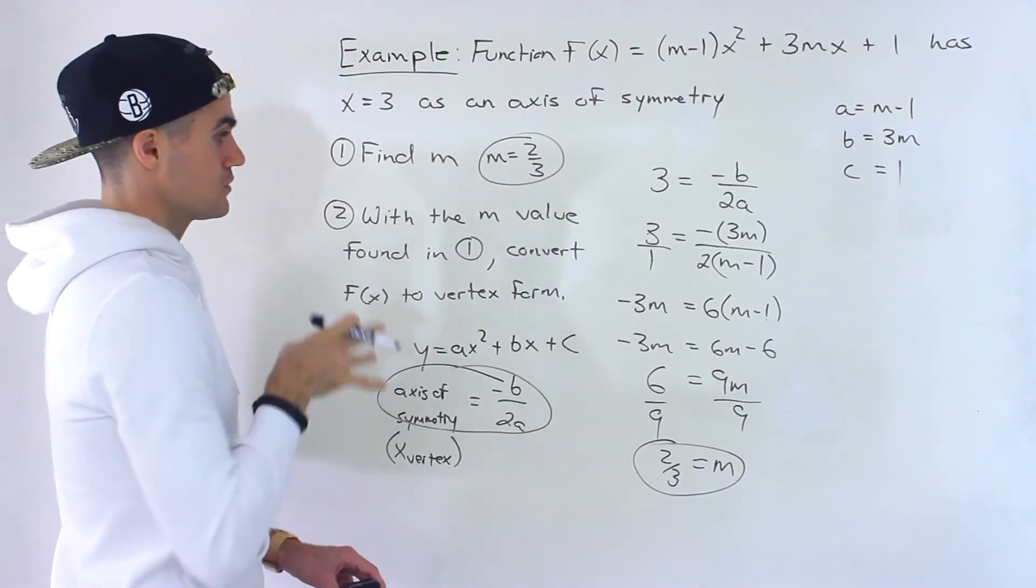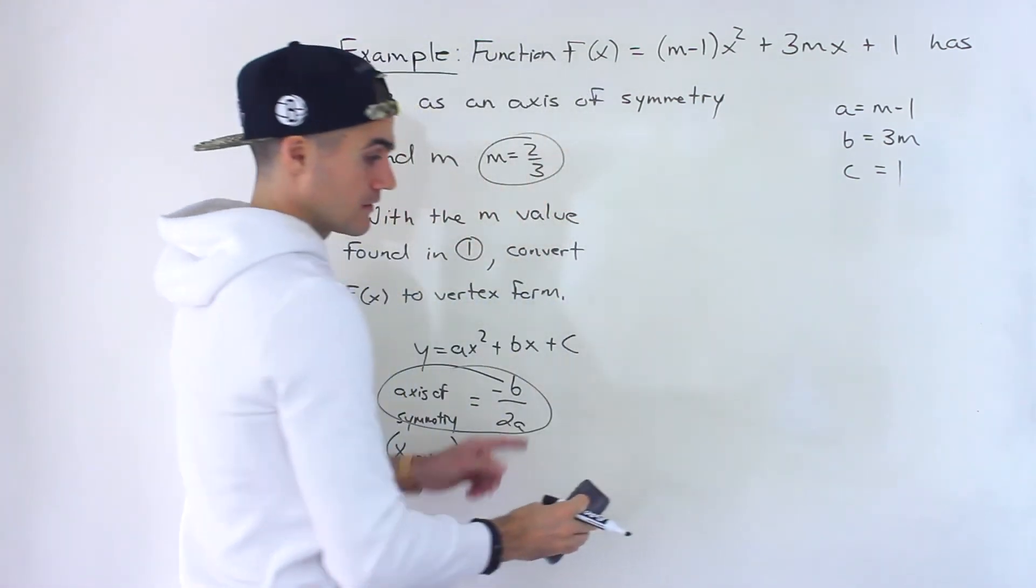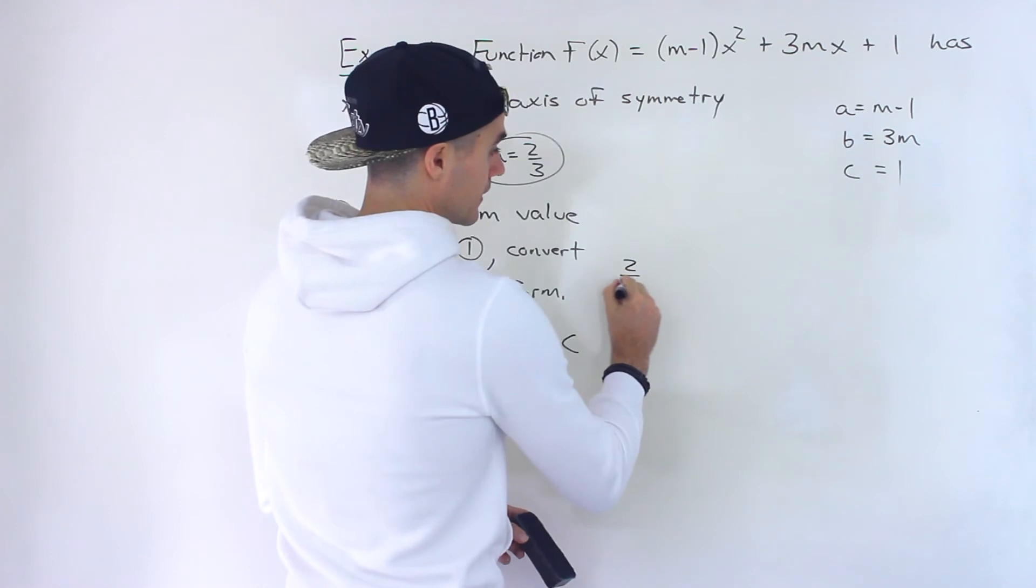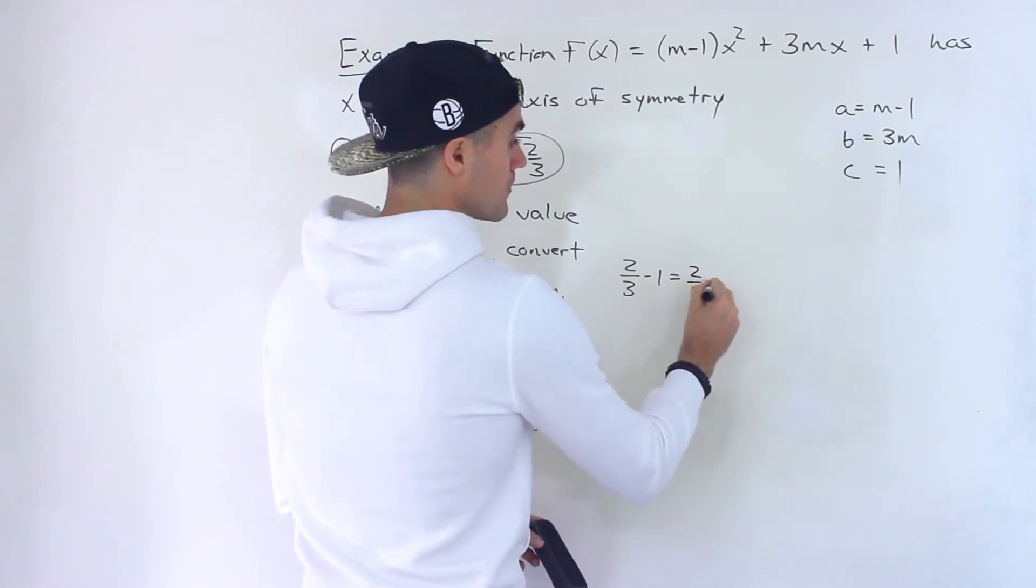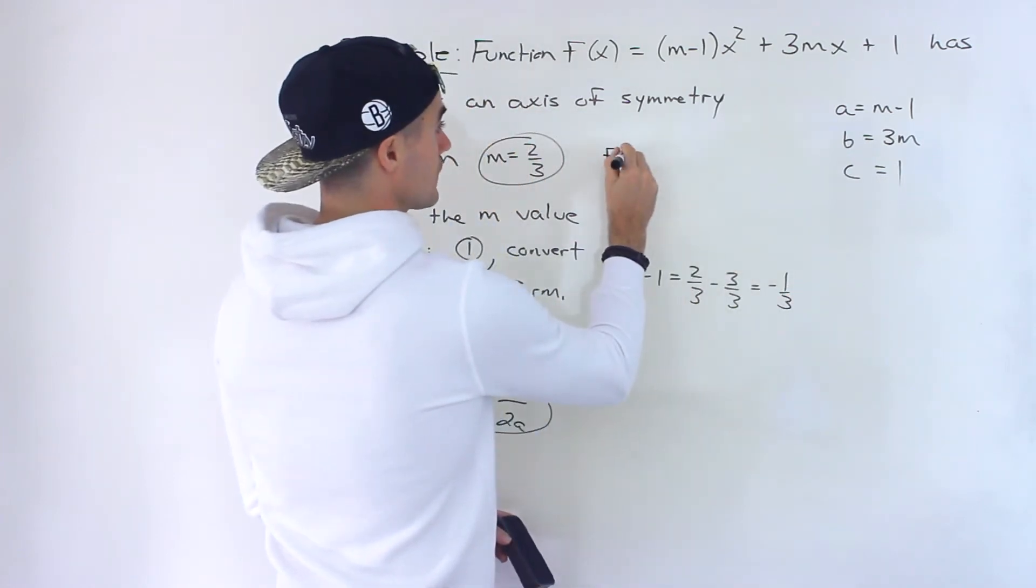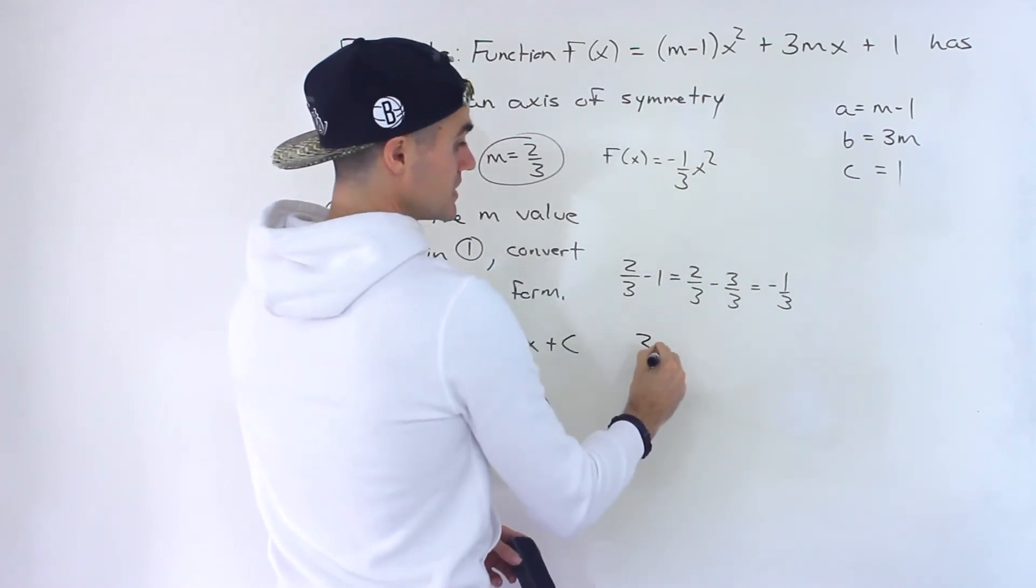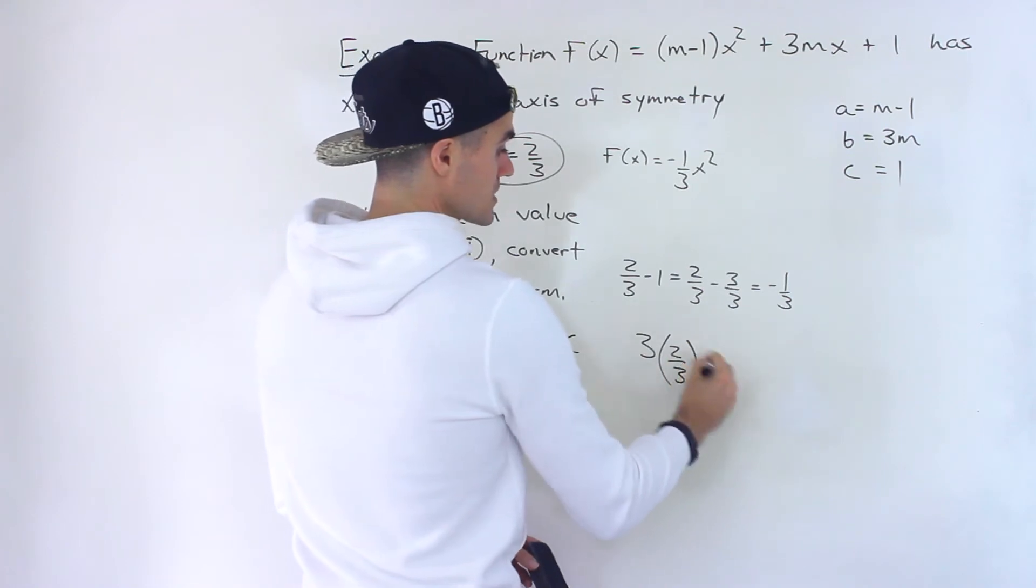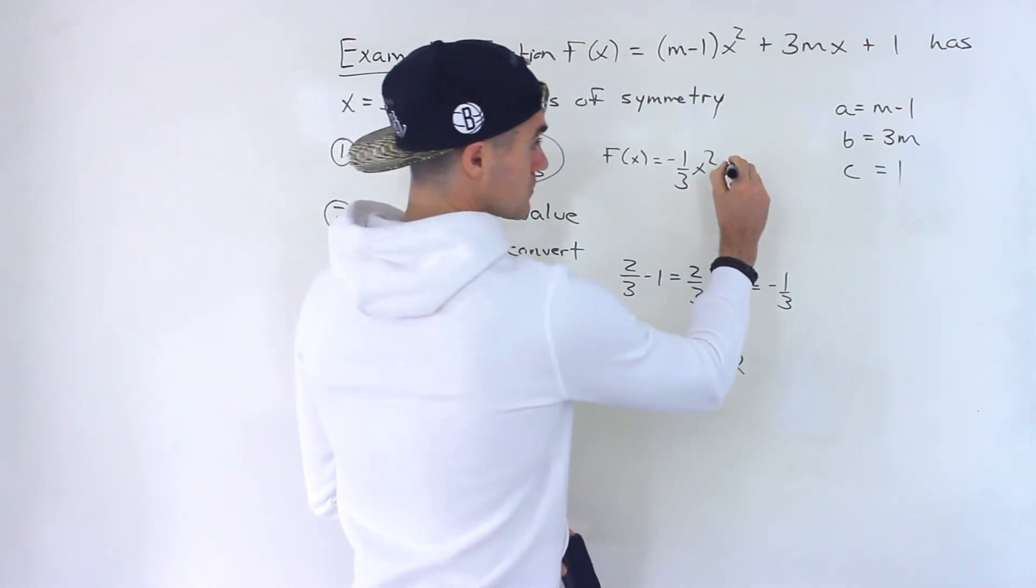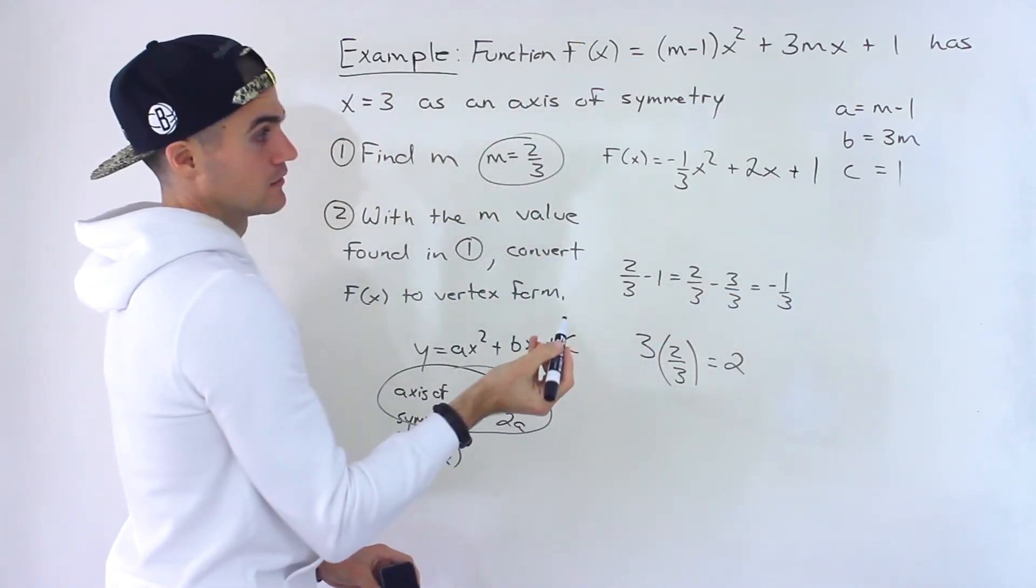And so now for number two, what we got to do is first plug in that m value of 2 over 3 here. So 2 over 3 minus 1, what's that going to give us? Well, that's going to be like 2 over 3 minus 3 over 3, which would be negative 1 over 3. So rewriting this function, it would be negative 1 over 3x². And then we have 3 times m, which is 2 over 3. The 3s cancel out. We're just left with a 2. So the b value ends up being 2. So this would end up being plus 2x. And then we have the c value at the end, plus 1, like that.